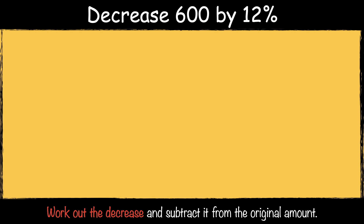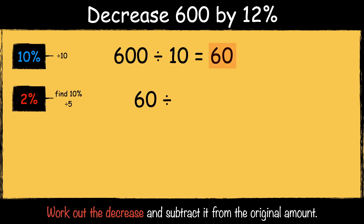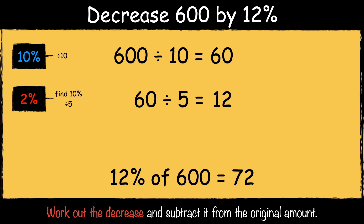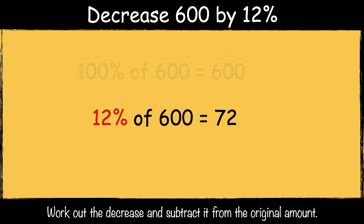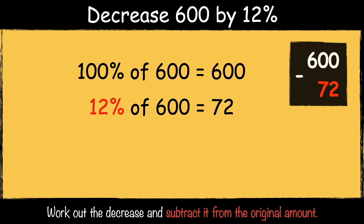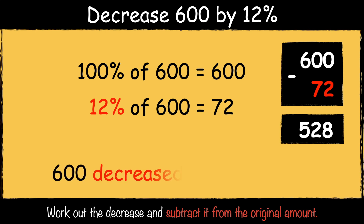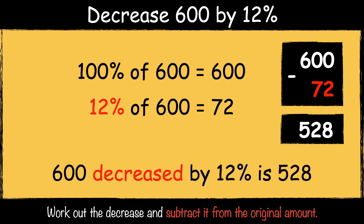Here's the last example: decrease 600 by 12%. First we can find 10% of the number by dividing it by 10. 600 divided by 10 is 60. One way that we can find 2% is by dividing the 10% answer by 5. 60 divided by 5 is 12. So 12% of 600 is 72. The next step is to subtract it from the original amount. 600 take away 72 is 528. So 600 decreased by 12% is 528.